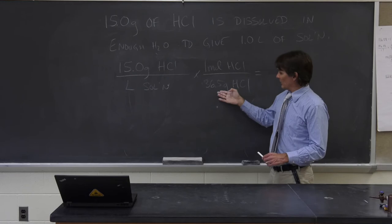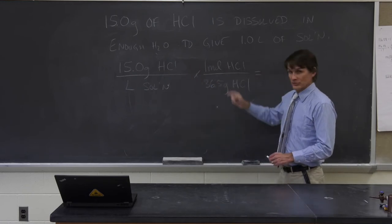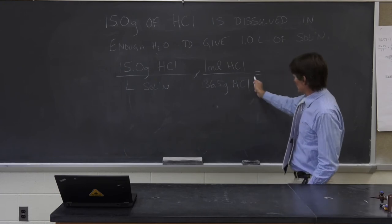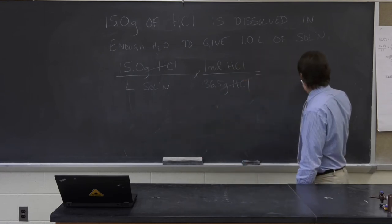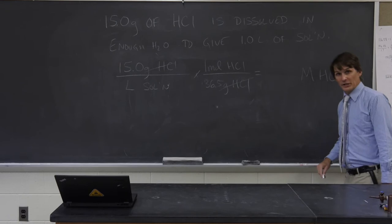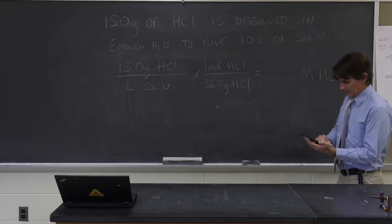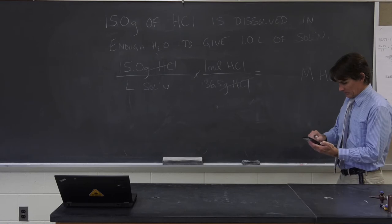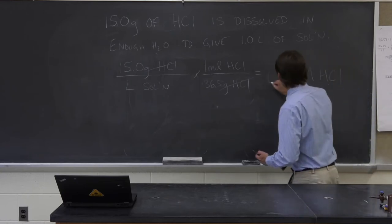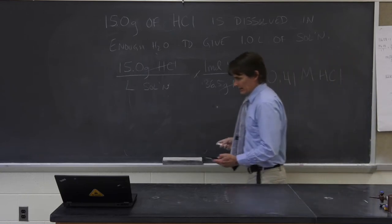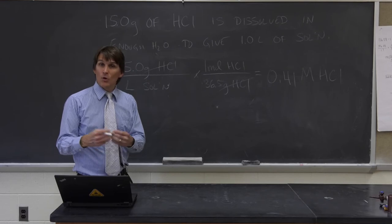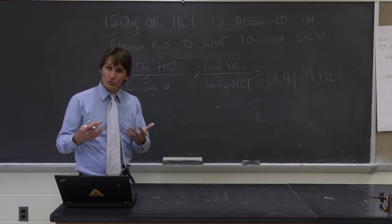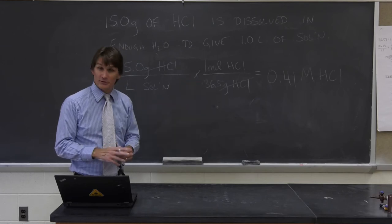If you look up the appropriate values on the periodic table for the molar masses of hydrogen and chlorine, you'll find that there are 36.5 grams of hydrochloric acid in one mole. By multiplying by this conversion factor, I'm able to convert grams of HCl to moles of HCl. The units that survive are moles per liter — molarity, capital M, molar HCl. Doing the numbers: 15 divided by 36.5 equals 0.41 molar. This solution is a 0.41 molar solution of hydrochloric acid, or 0.41 moles of HCl per liter.